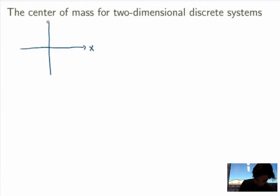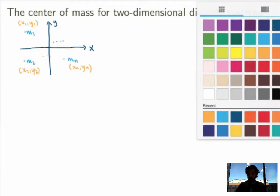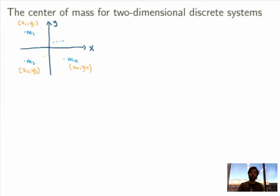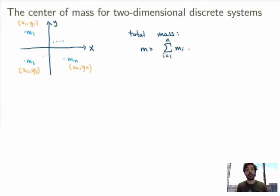So I'm working in the xy-plane. Suppose I have a bunch of masses m1, m2, and so on up to mn, and each of these has a position given by coordinates (x1, y1), (x2, y2), and so on up to (xn, yn). The total mass of the system is just the sum from i equals 1 to n of mi. That was easy.